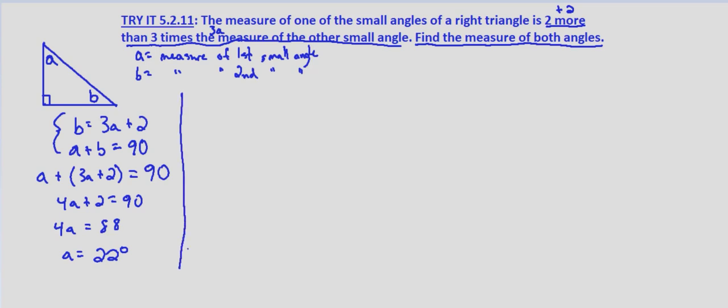Now our next step is to substitute what we solved for. Substitute A equals 22 degrees. If we look at our first equation, B equals 3A plus 2, so B equals 3 times 22 plus 2. That equals 66 plus 2, which equals 68 degrees.